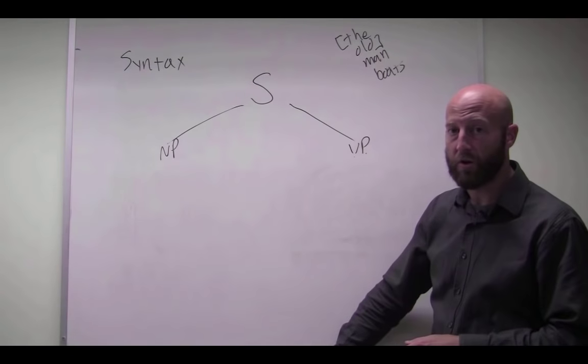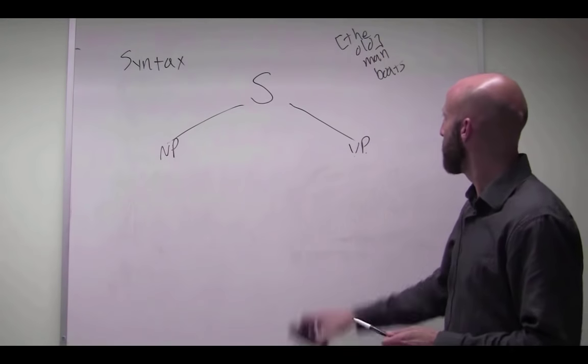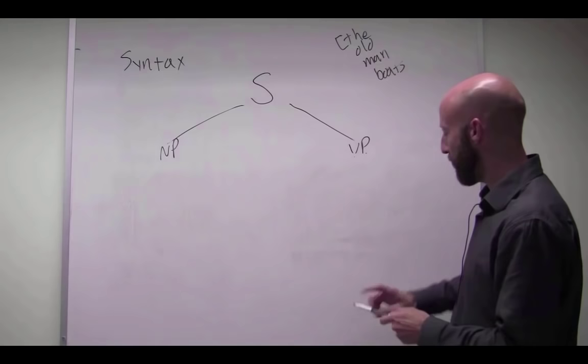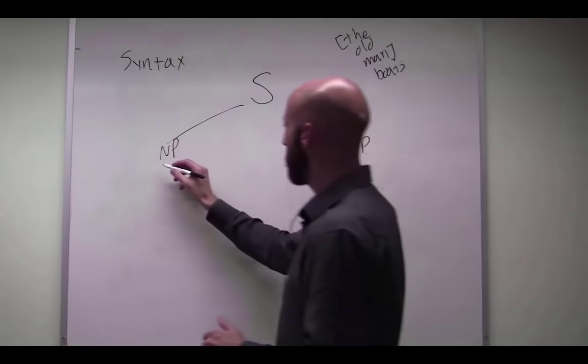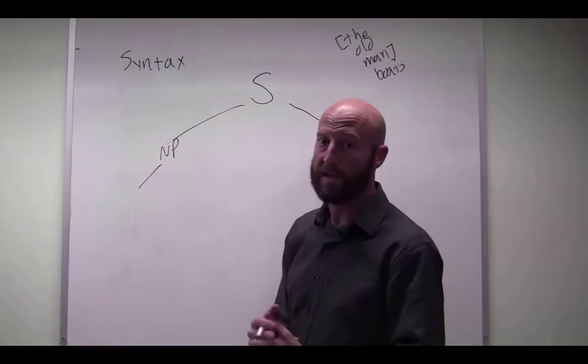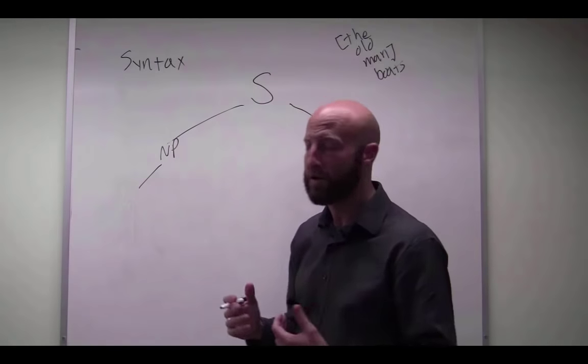So we can draw tree structures for both of these. So let's take that first example where this is the constituent, the old man, just one person, and boats is the verb. Again, we have a noun phrase. We have to, because that's how they start out in English. That's what our phrase structure rules tell us. So we have the determiner,